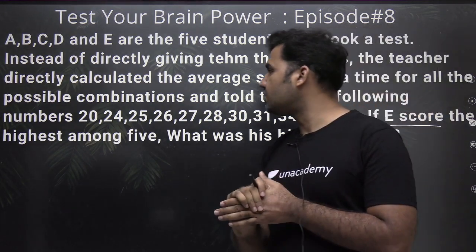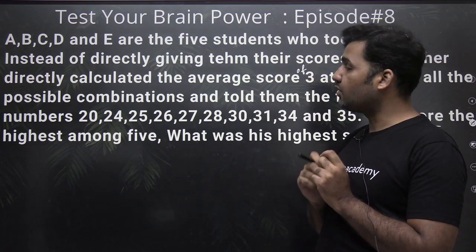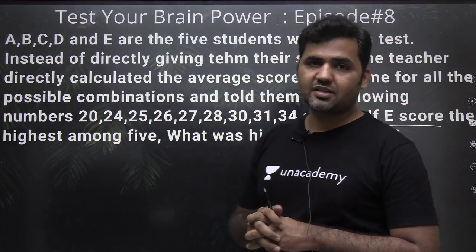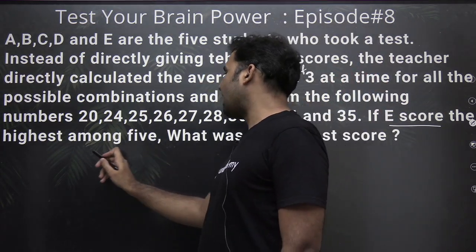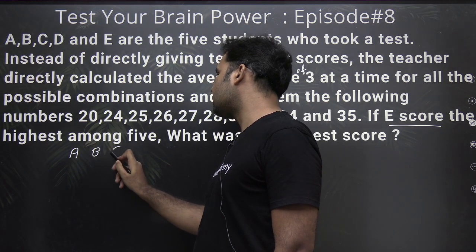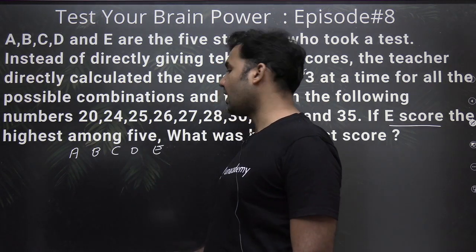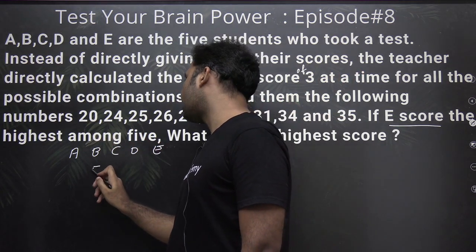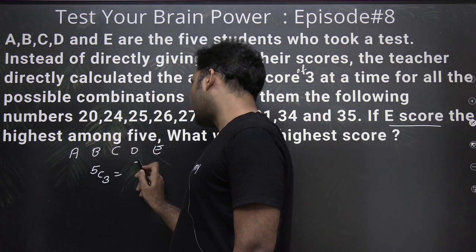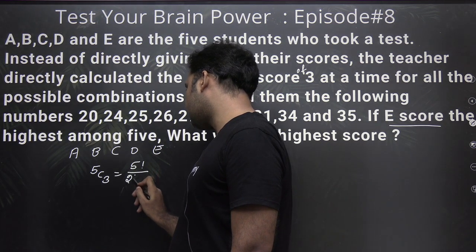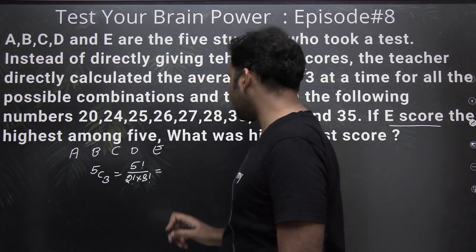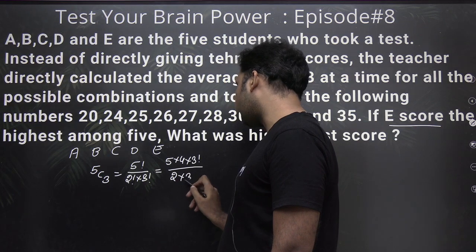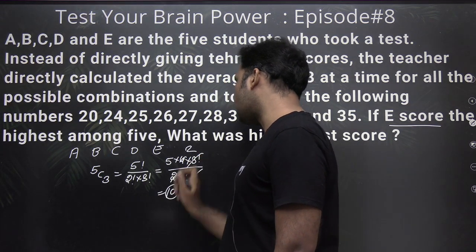The first point you need to keep in mind is the number of possible combinations when selecting three out of five people — this involves permutation and combination. I have five people: A, B, C, D and E. If I select three out of five, the number of combinations is 5C3. Five factorial divided by two factorial times three factorial equals five into four into three factorial divided by two into three factorial, which simplifies to ten.